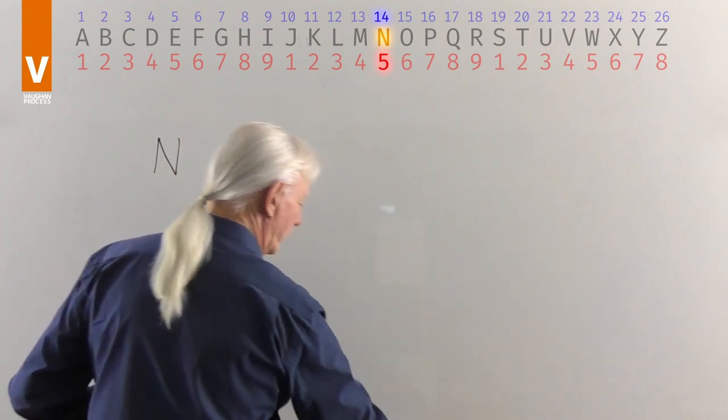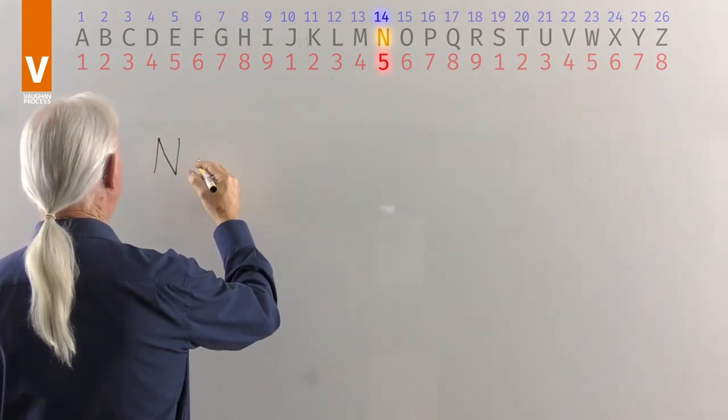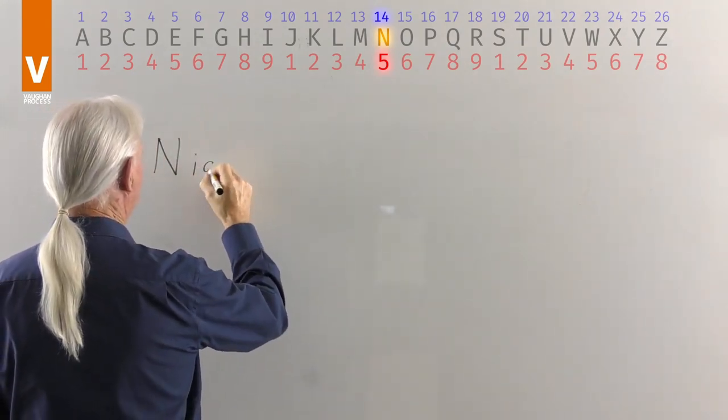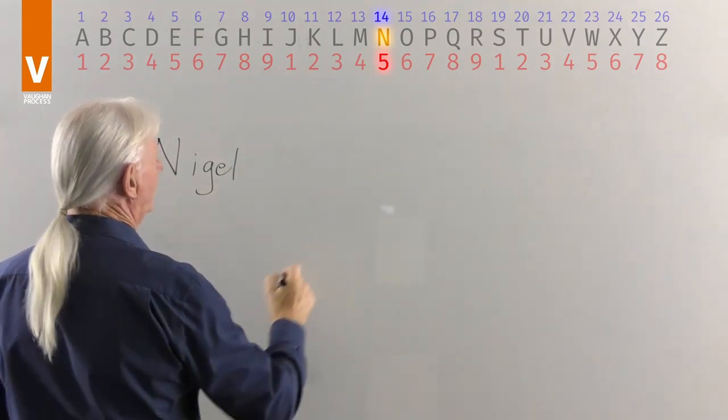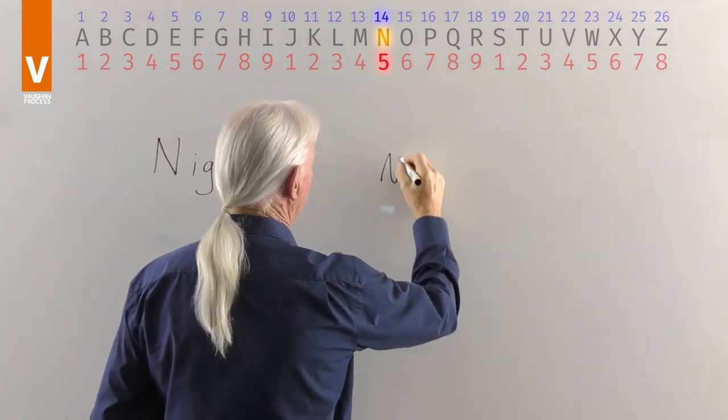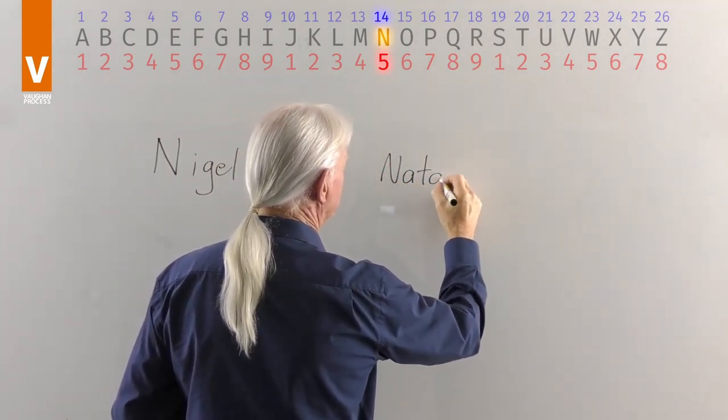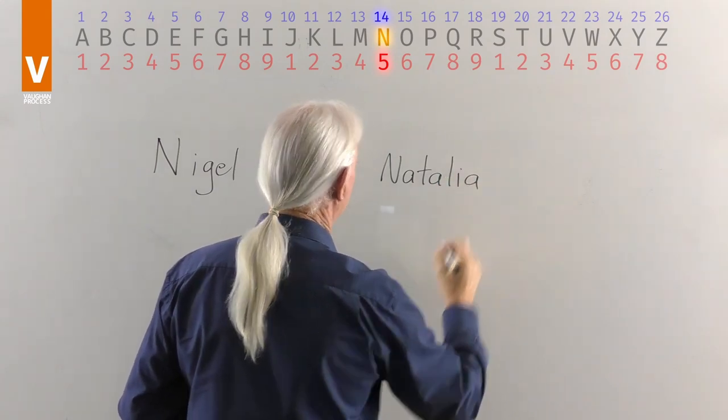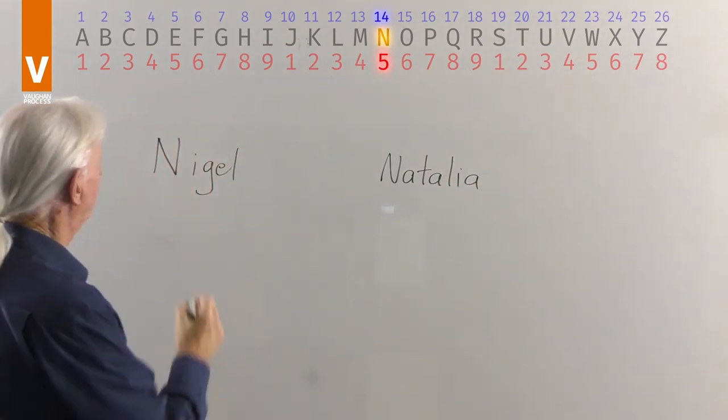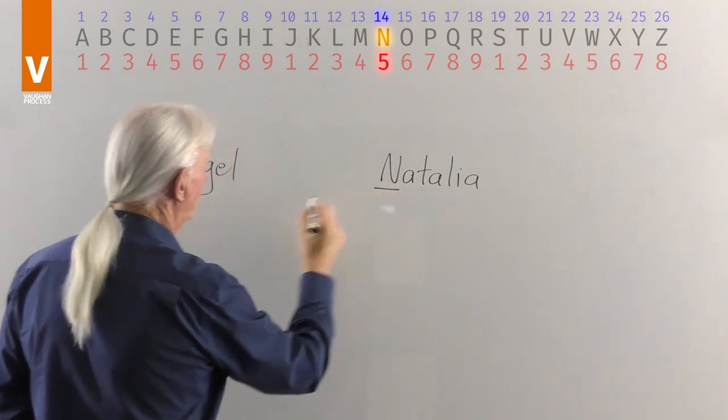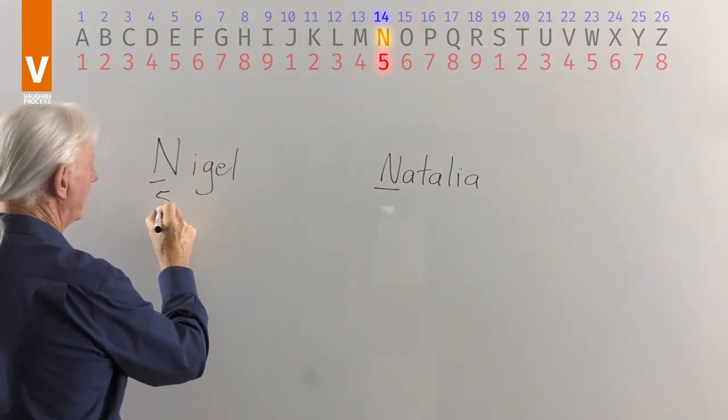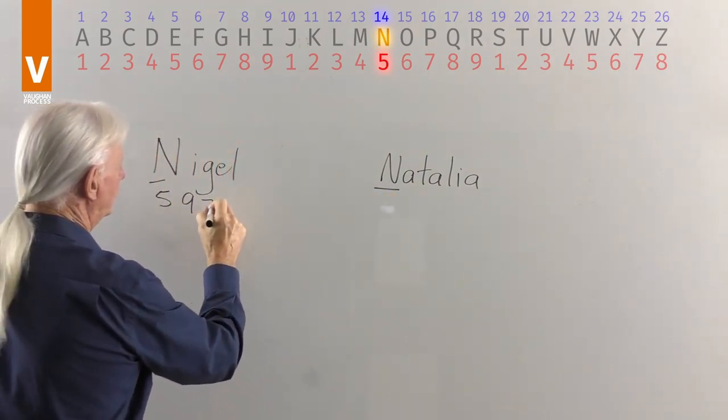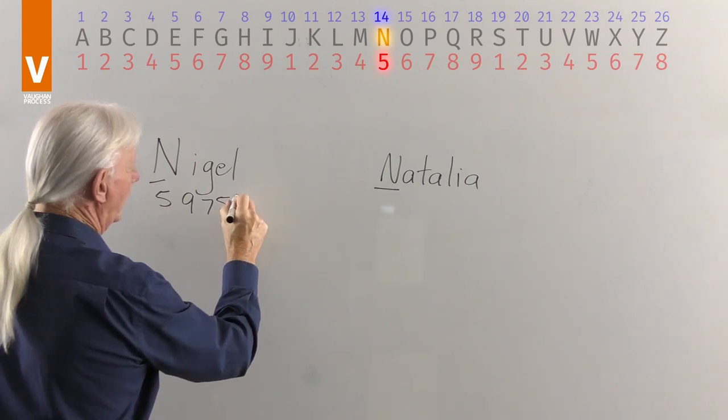So we'll put Nigel as a name and we'll put Natalia as another name. Having a look then at the N which is a value 5 letter, the I is 9, G is 7, E is 5 and L is 3.